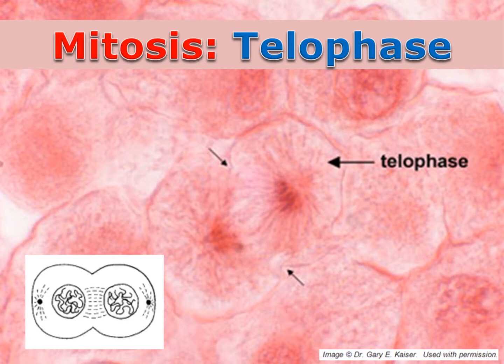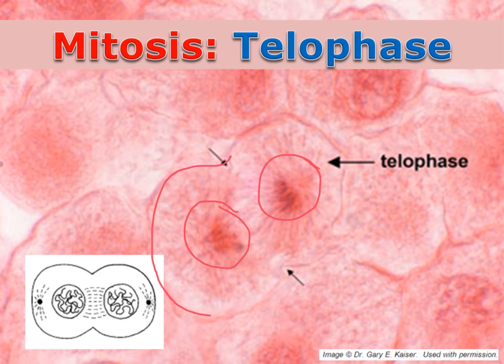During telophase, the final stage of mitosis, a nucleus begins to reform around each set of chromosomes, and the chromosomes begin to relax. The process of cytokinesis actually begins during telophase. That gives the cell its signature shape, looking like the number eight, or a peanut.